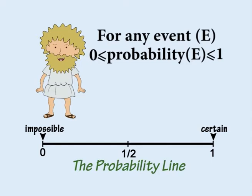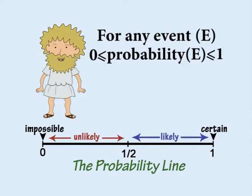The probability of an event cannot be less than zero, because zero means it is impossible. And the probability cannot be greater than one, because one means absolute certainty. If the probability of an event is less than one-half, then it is said to be unlikely. If it is greater than one-half, then it is said to be likely. And if the probability is exactly one-half, then the event is said to have an even chance of happening.